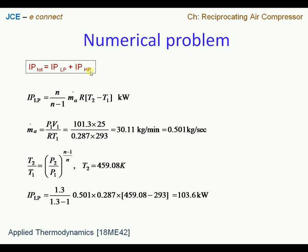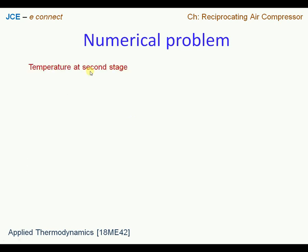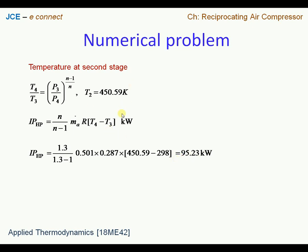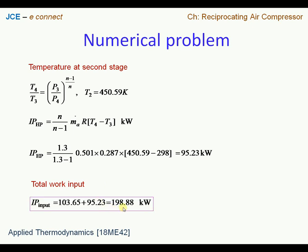Plugging all terms into the equation gives the indicated power for the low pressure cylinder as 103.6 kW. For the high pressure cylinder, the same steps are followed: temperature T4 is found using the isentropic relation, and these values are substituted into the standard indicated power equation, giving IP for the high pressure cylinder as 95.23 kW. The total work input is the sum of both, giving the total power for the two-stage compressor.